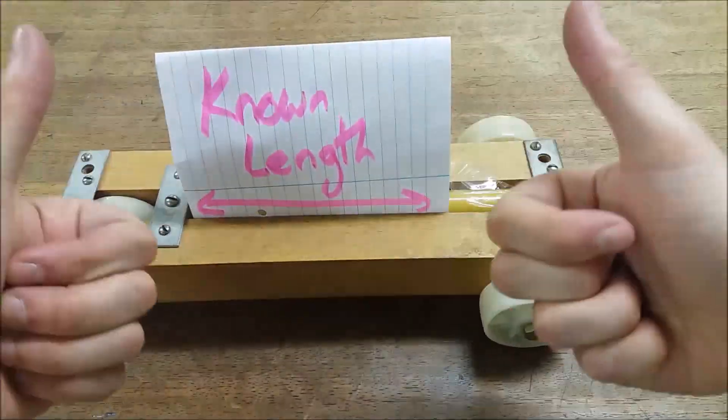Now for other objects moving through a stationary lightgate, the principle's the same. Just attach a piece of card of a known length on the moving object, and it's all good.